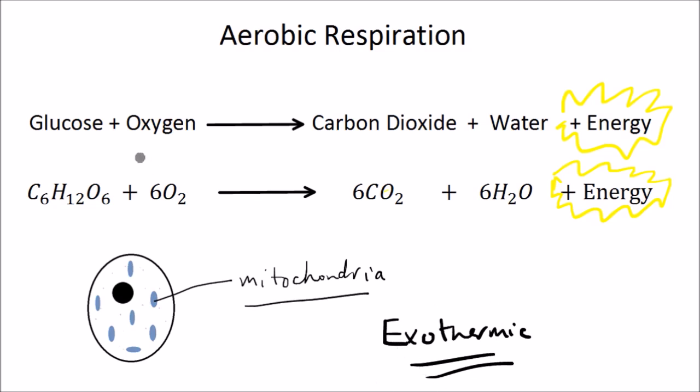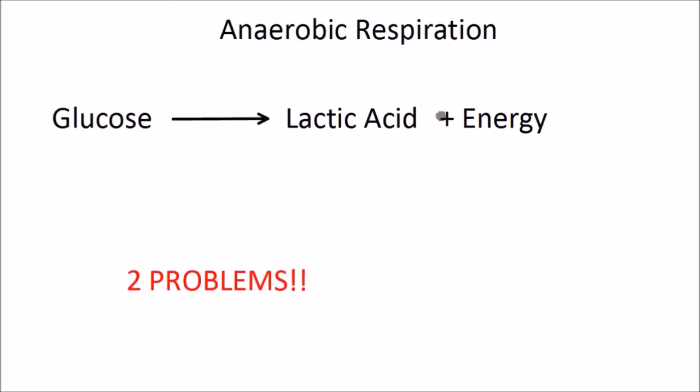Now the next thing is what happens if our blood is unable to supply enough oxygen. Well then what we do is anaerobic respiration. So anaerobic respiration means without oxygen. You can divide this word into two. The first bit means without and the second bit refers to the oxygen, aerobic. So anaerobic respiration means respiration without oxygen.